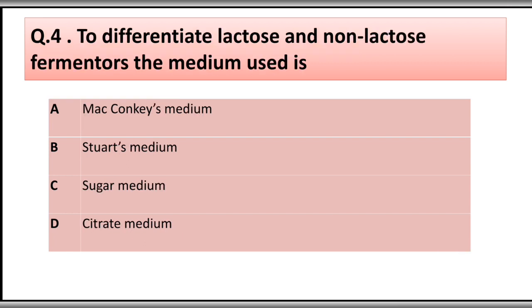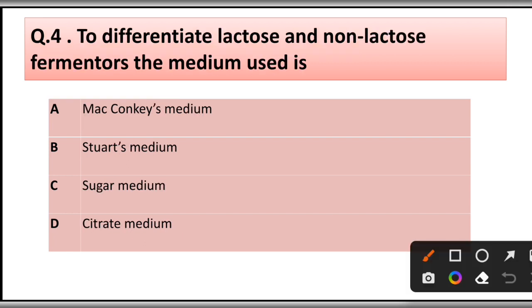Question number four: To differentiate lactose and non-lactose fermenters, the medium used is: A) MacConkey medium, B) Saboraud medium, C) sugar medium, D) citrate medium. The correct answer is option A, MacConkey medium.